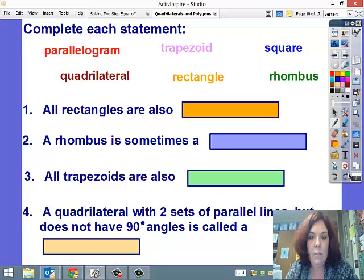Your choices are parallelogram, quadrilateral, trapezoid, rectangle, square, and rhombus. The questions may have more than one answer, but you're looking for the best answer. All rectangles are also blank. A rhombus is sometimes a blank. All trapezoids are also blank. A quadrilateral with two parallel sides but does not have 90-degree angles is called a blank. Do that homework check, and then you'll be able to practice in class.